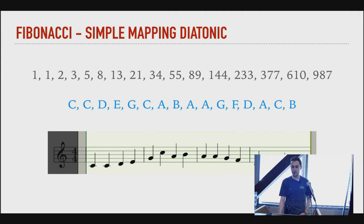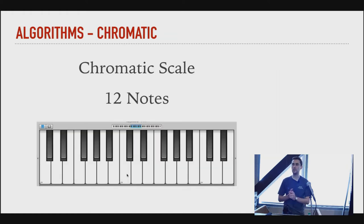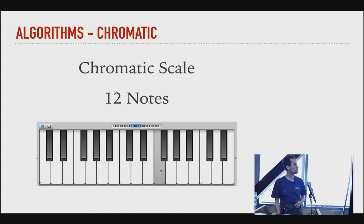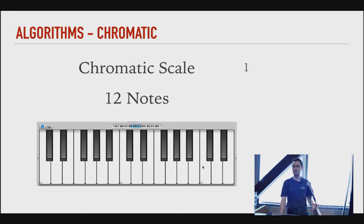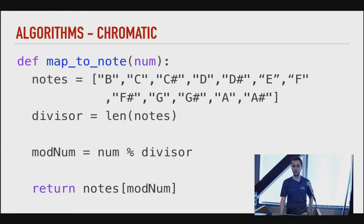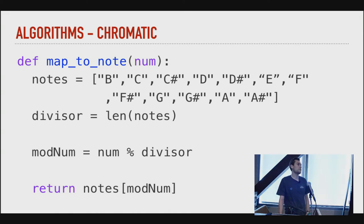With Fibonacci applied this is called Simple Mapping Diatonic — it's exactly the algorithm you heard earlier. I want you to hear it again so you can compare it with the output of the other algorithms. [Audio plays] Next would be the chromatic scale. The chromatic scale has 12 notes in an octave because it includes every single semitone in between. This is what it looks and sounds like on a piano starting with C. [Audio plays]